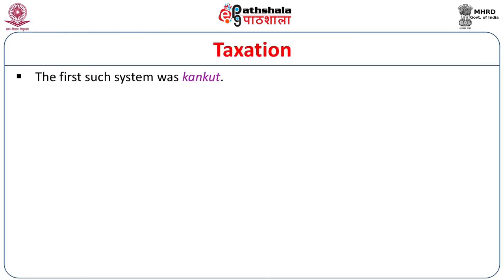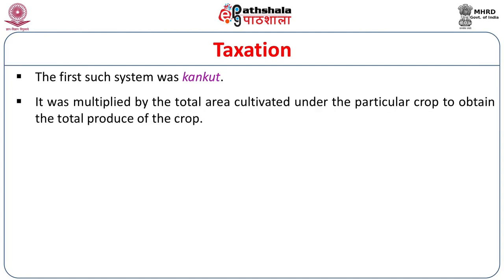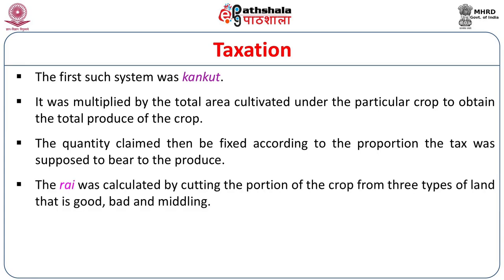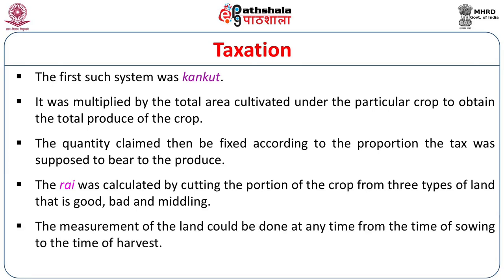This system was first called Kaan Khut. It was multiplied by the total area cultivated under a particular crop to obtain the total produce. The quantity claimed was then fixed according to the proportion the tax was supposed to bear to the produce. The yield was calculated by cutting the portion of the crop from three types of land — good, bad, and middling. The measurement of land could be done at any time from the time of sowing to the time of harvest.